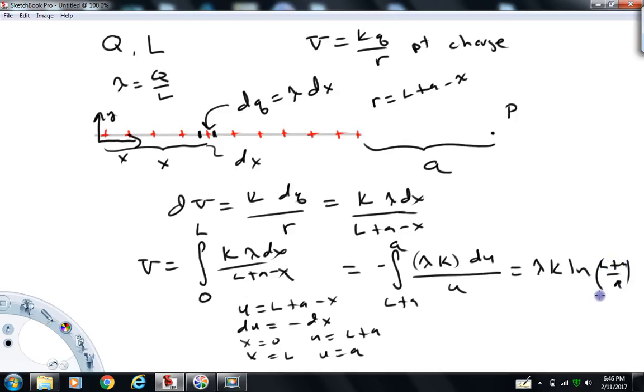A little hard to read there. Let me rewrite it down here. So we've got k lambda times the natural log of l plus a over a. And there's my expression for the electric potential at p.